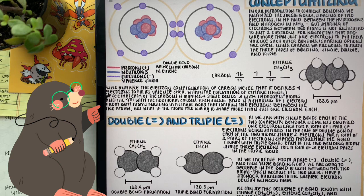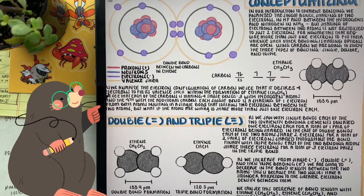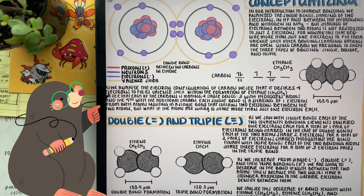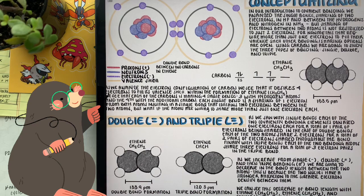A single bond is the sharing of two electrons, a double bond is four, and a triple bond is six. As we increase the number of electrons between the two nuclei, we increase the attractive forces between the two atoms. As we increase that attractive force, we shorten the bond length, and as we shorten the bond length we increase the bond energy. So a triple bond has more bond energy than a double bond, and a double bond has more bond energy than a single bond.